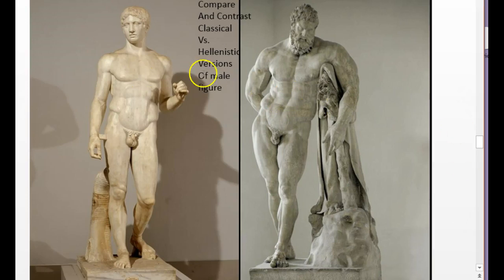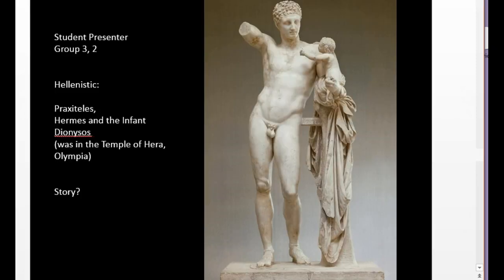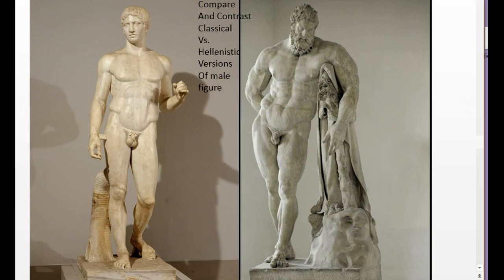If you stop the video and do a compare and contrast, you can see the difference. The proportional system is still there, but it's starting to fall apart a bit — look at those shoulders. Hellenistic statues tend to be over-muscled often, or depict emotions that are not the serene, controlled emotions of the Classical. One of the student presenters will tell us about the very famous Hellenistic statue coming up. Most Hellenistic statues tell stories that are not necessarily apparent — this Spear Bearer is just a man holding a spear — but there is a story behind the Hellenistic works.